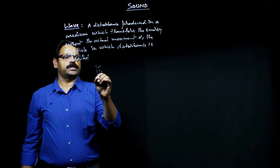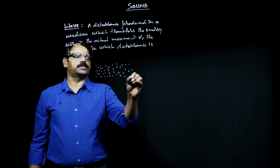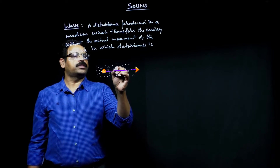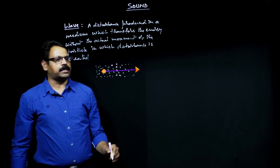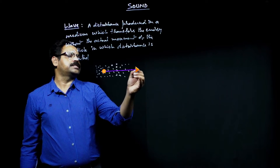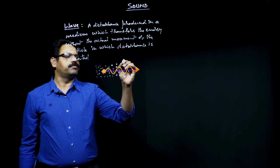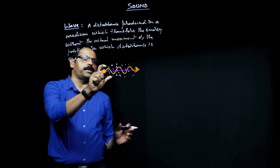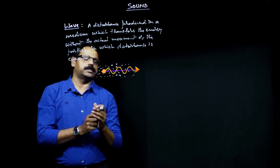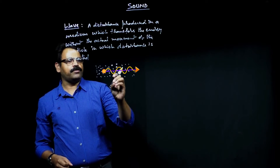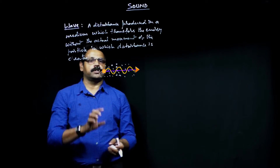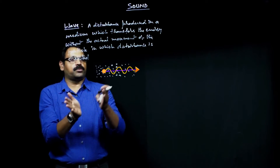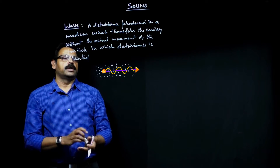It is easy to understand — a disturbance is produced in a medium. Suppose a disturbance is produced over here and it has to be carried to the other end without disturbing the actual positions of the particles. The disturbance is transmitted to the other region in the form of a wave. Wave need not necessarily look like one particular pattern — we are going to learn what it means and how many types of waves there are.